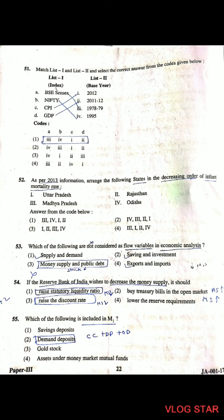Question 53: Which of the following are NOT considered as flow variables in economic analysis? Money supply and public debt are not flow variables — they are stock variables. Flow variables are supply and demand, saving and investment, and exports and imports.